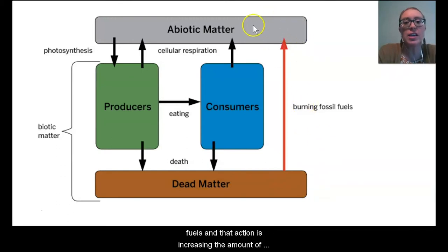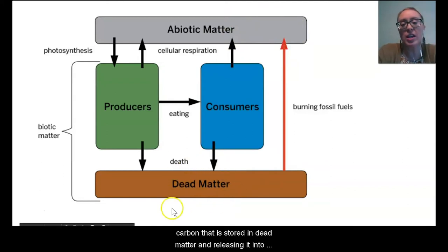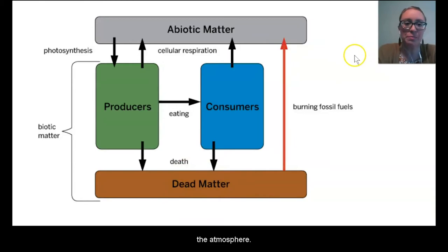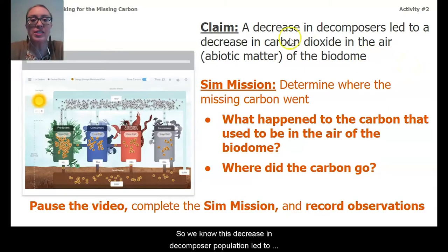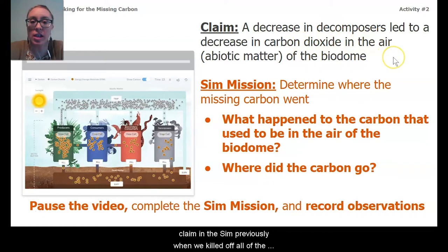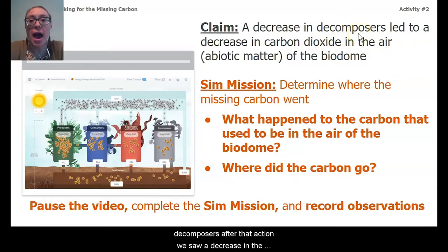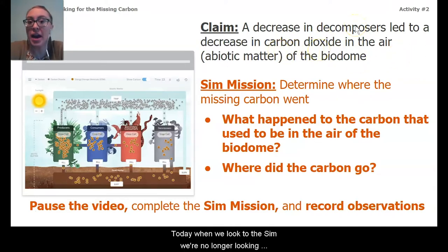That action is increasing the amount of carbon in our abiotic matter because it's taking the carbon stored in dead matter and releasing it into the atmosphere. We know this decrease in decomposer population led to the decrease in carbon dioxide, and we've tested this claim in the sim previously — when we killed off all of the decomposers, we saw a decrease in carbon dioxide in the air as the effect of that action.